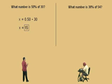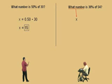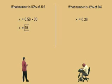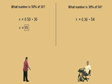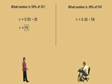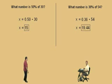Let's do another one. What number is 36% of 54? Here we go. We're going to read and translate. What number is 36% of 54? Get your calculator out and do 0.36 times 54 and what do you get? 19.44. Very nice there, Charlie. 19.44.